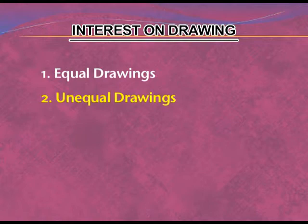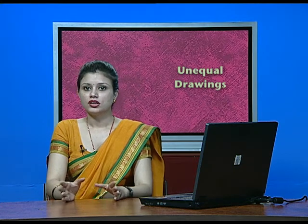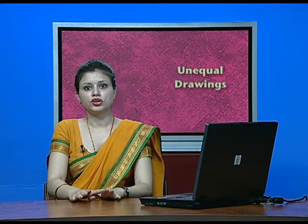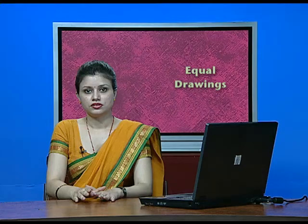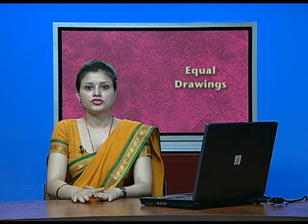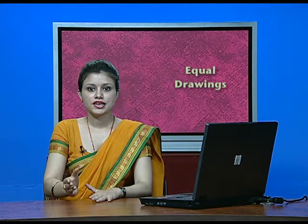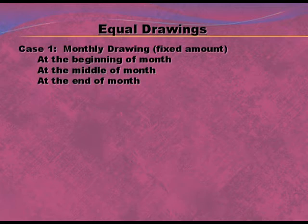We will focus on the various cases of equal drawings. The first case is monthly drawings, where a fixed amount is drawn from January up to December. Under this case, there are three sub-cases: drawings made at the beginning of the month, at the middle of the month, and at the end of the month.